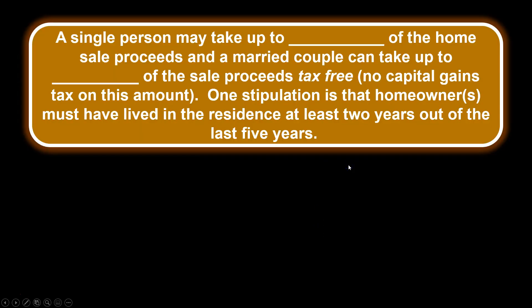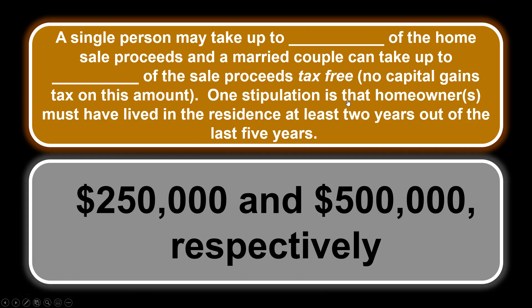A single person may take up to this amount of the home's sale proceeds and a married couple can take up to this amount of the sales proceeds tax-free, with no capital gains tax on these amounts. One stipulation is that the homeowners must have lived in the residence at least two years out of the last five. Capital gains tax-free money is $250,000 for a single person and a married couple can take up to $500,000 tax-free.